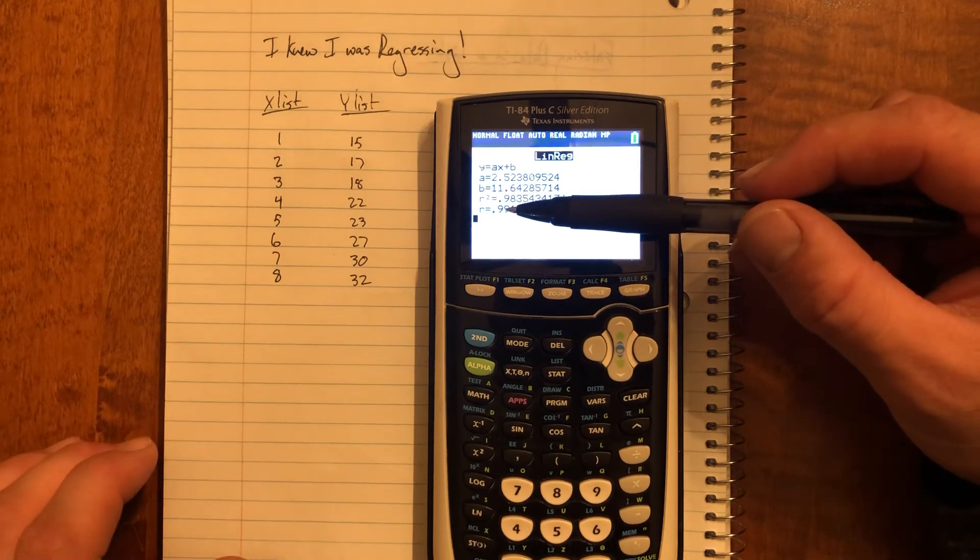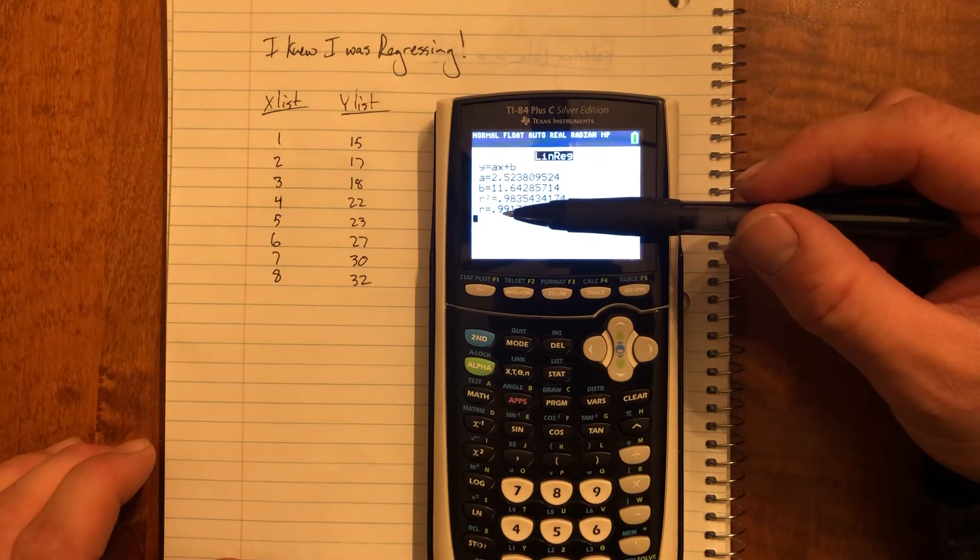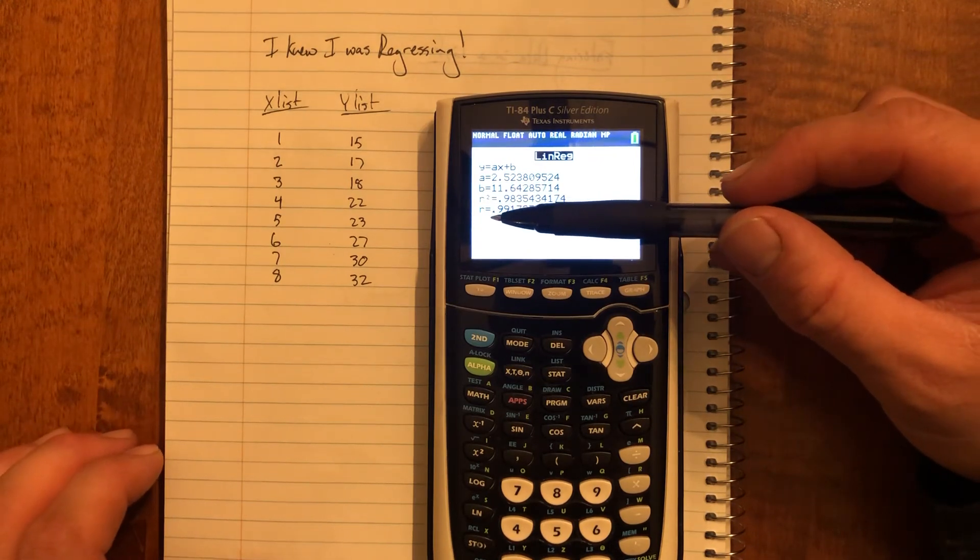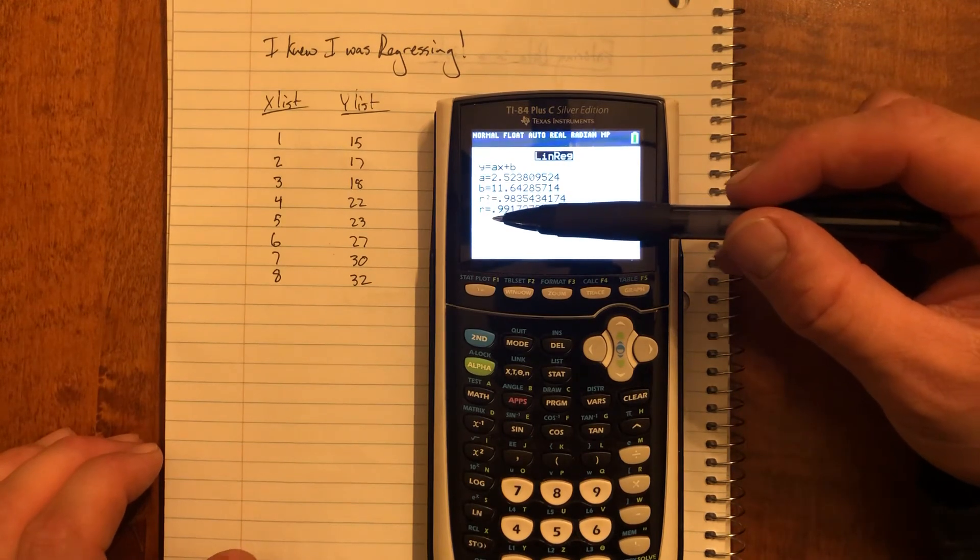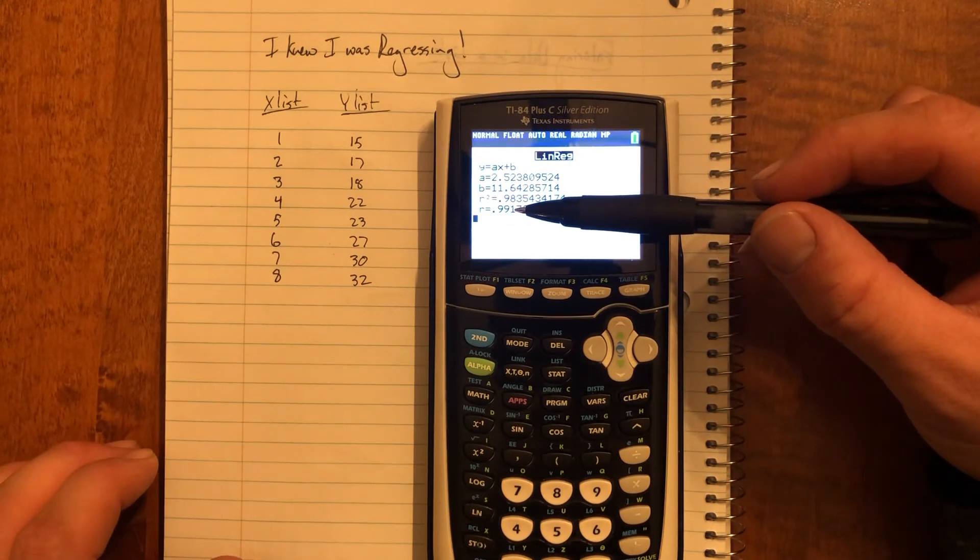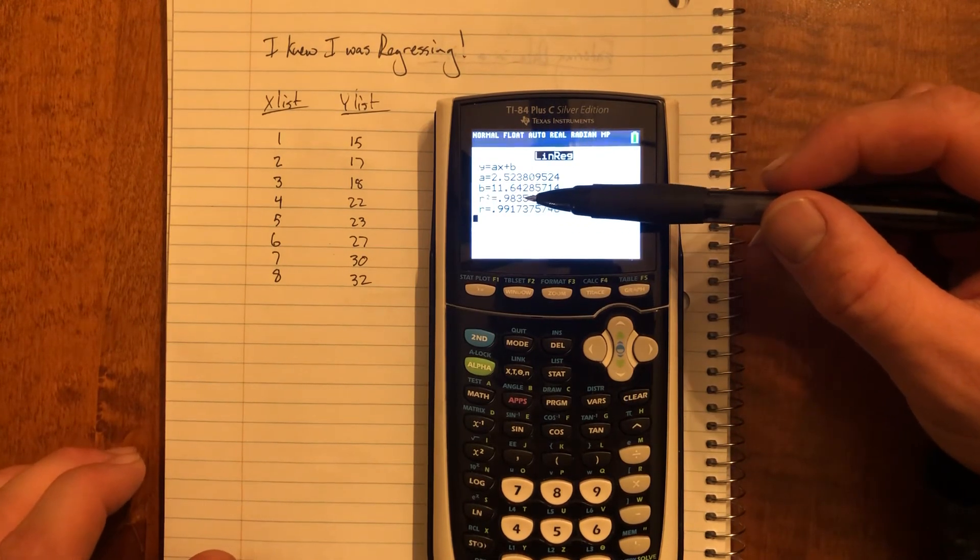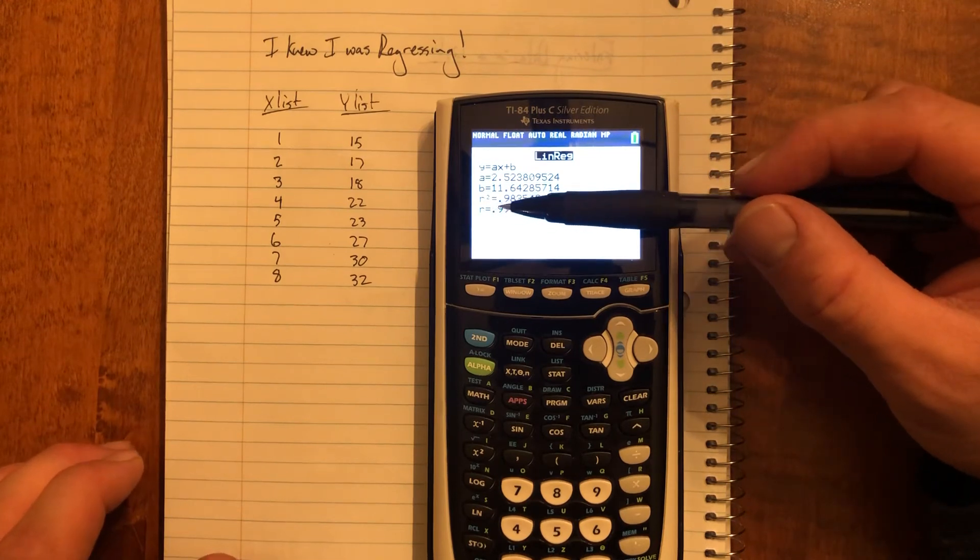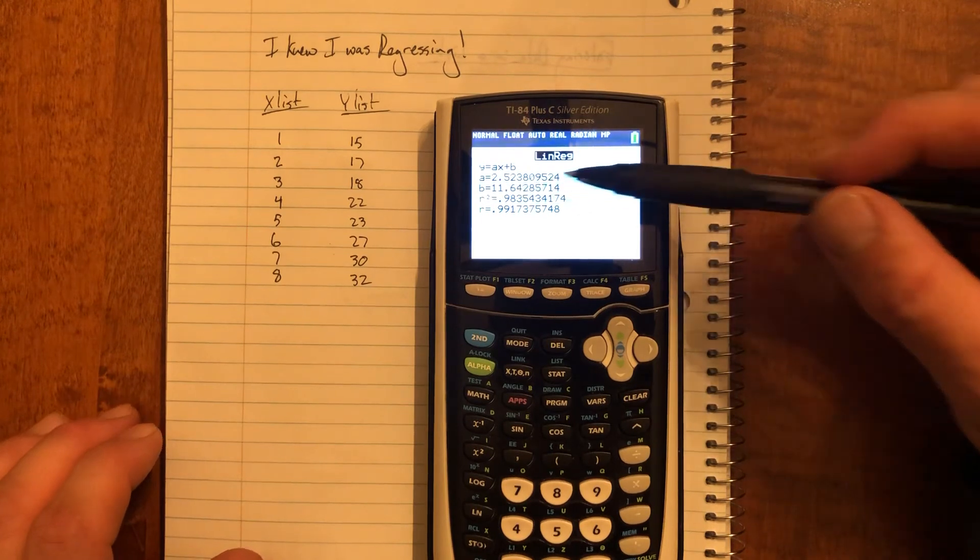It tells me that these are very closely linearly related. It's very close to one. Remember, as your r value gets to zero, there's no relationship. As your r value gets to negative one, there's a perfect negative relationship. And as your r value gets to positive one, there's a perfect positive relationship. It's not that an increase of one means an increase of another. It means that an increase of one means exactly a times the increase of the other.